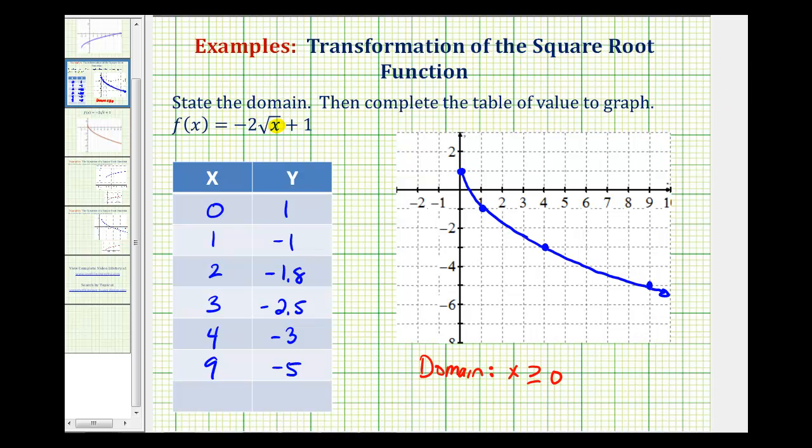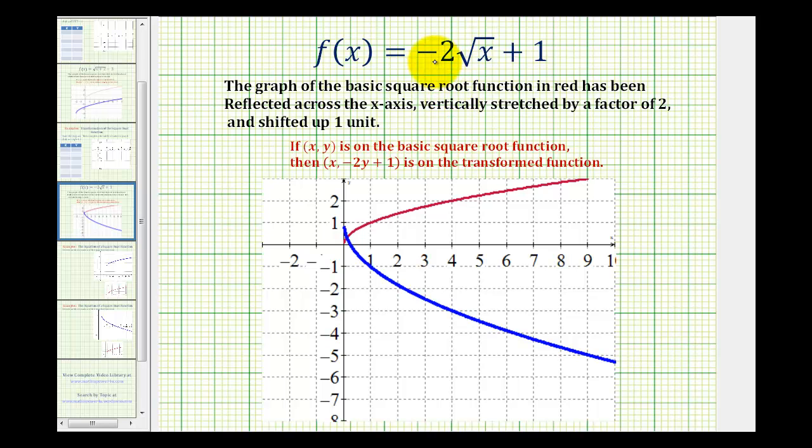Now one more thing I do want to mention. We did just discuss transformations of the square root function. This negative two represents two transformations. Because it's negative, it reflects the basic square root function across the x-axis. And then the two produces a vertical stretch by a factor of two. Lastly, the plus one on the end represents a vertical shift up one unit.